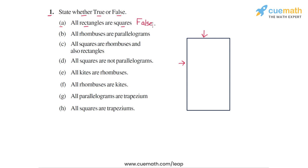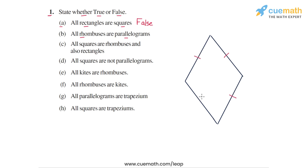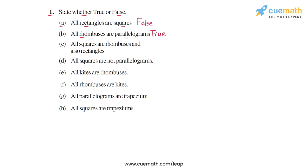The second statement says: all rhombuses are parallelograms. A rhombus is a figure which is basically any parallelogram in which all four sides are equal. So by definition, a rhombus is a parallelogram — the second statement is true.